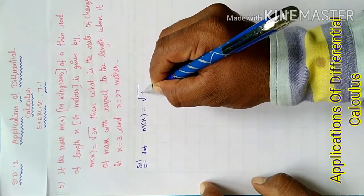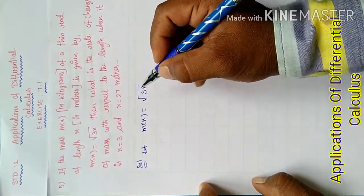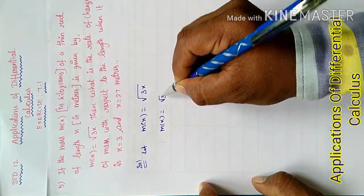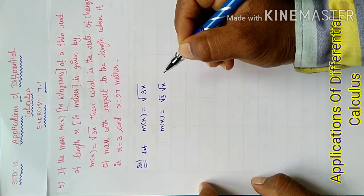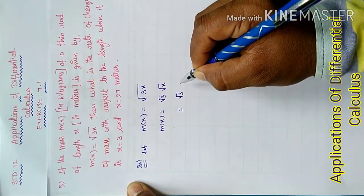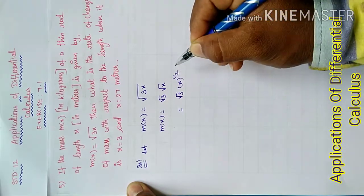Therefore m(x) equal to root 3 into root x. Now root 3 into x power 1 by 2. Apply power rule now, that is m(x).